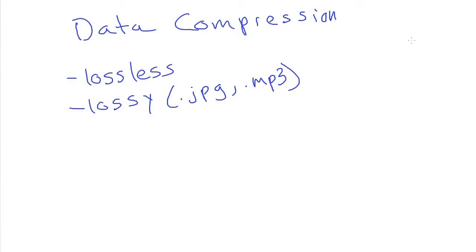With lossless encoding, you get exactly the same information, 100% identical, which means the file can't be as small as with lossy encoding. But it's important when you want the information 100% correct. So if you have a .zip file that compresses the files you put in, you need them to be 100% right. If you're turning in your project code as a .zip file, you don't want it changed slightly because it's close enough — it matters for documents and things like that.